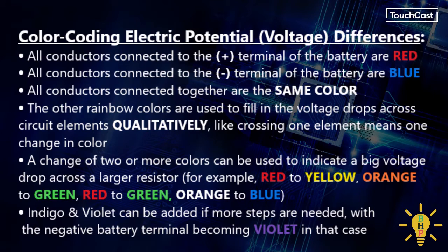And then as we go around the circuit, the other rainbow colors are used to fill in the voltage drops across circuit elements qualitatively. Like crossing one element can mean one change in color, which would be red to orange for example, or yellow to green. A change of two or more colors can be used to indicate a big voltage drop across a larger resistor. For example, we could code red to yellow, orange to green for a two-step change, or we could do red to green or orange to blue for a three-step change. We can, of course, also color red all the way down to blue if need be. And we can also use indigo and violet if we need more steps, with the negative battery terminal becoming violet in that case.